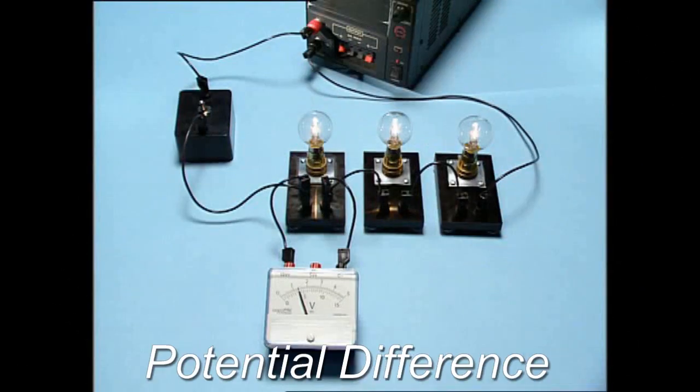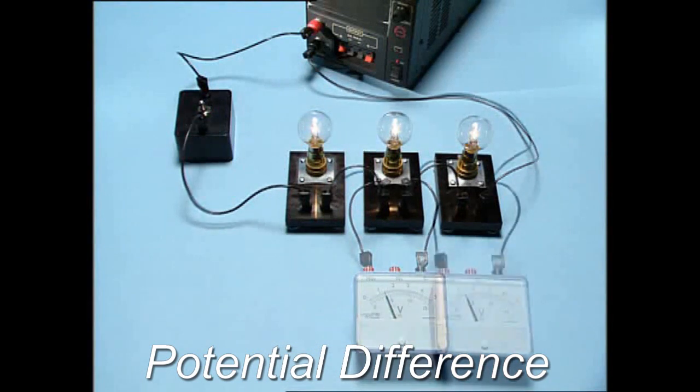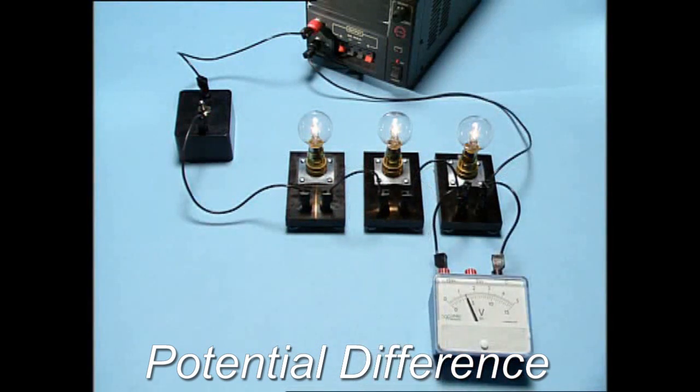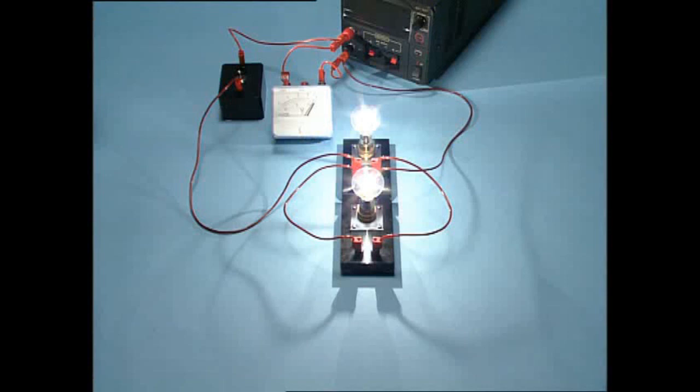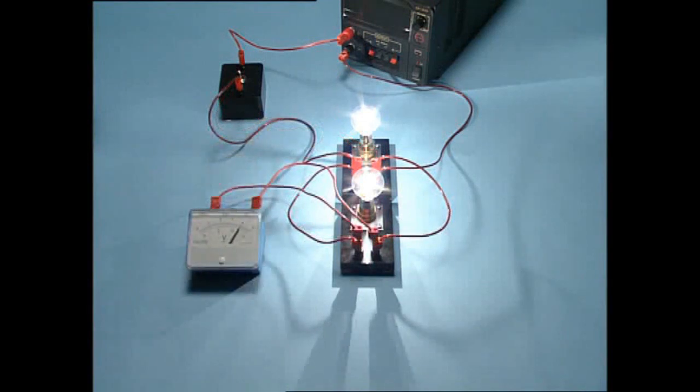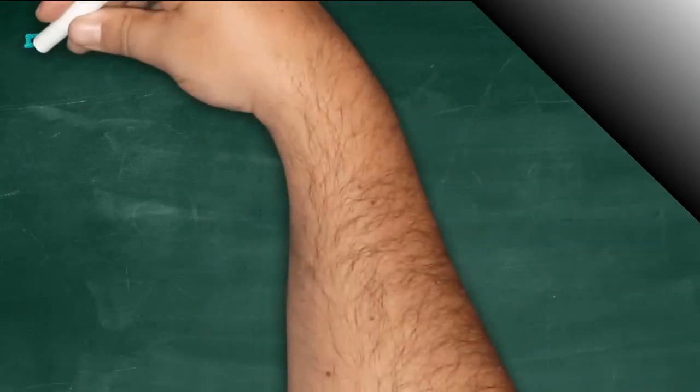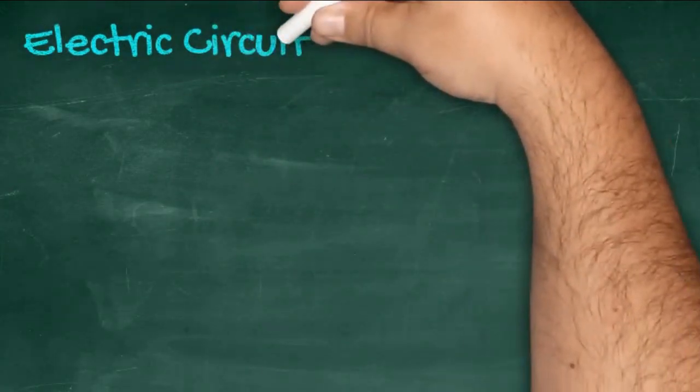Finally, let's consider voltage, first in a series circuit. The total voltage of the supply is split between the bulbs. The voltages across each component add up to equal the total voltage of the supply. What about voltage in parallel circuits? In parallel circuits, the voltage supplied by the battery is the same as the voltage across each component. You can think of each component as being directly connected to the battery.